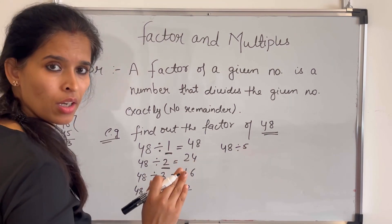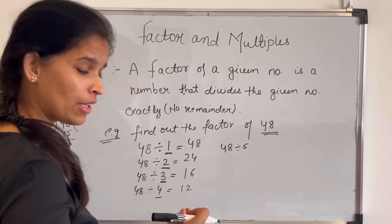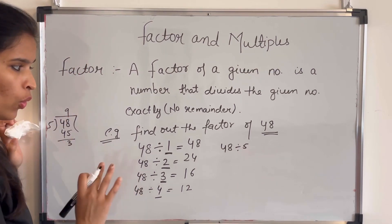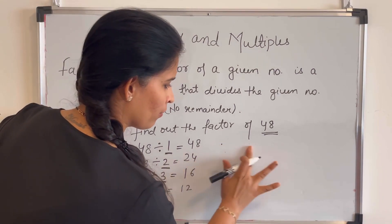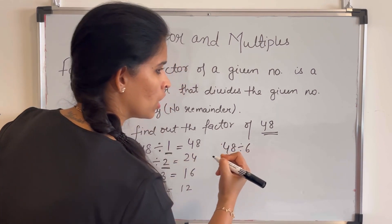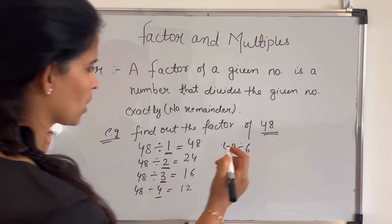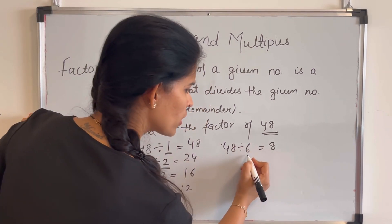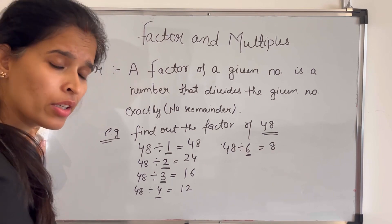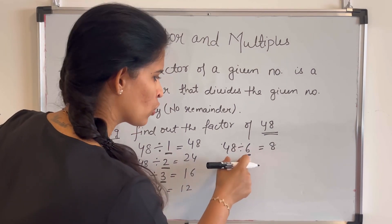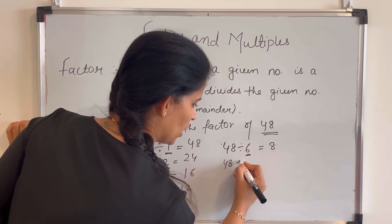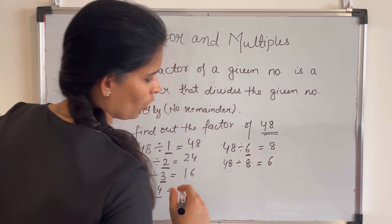So 5 is not a factor of 48, because a factor means those numbers which divide the given number completely — no remainder. What about 6? 48 divided by 6 is 8, so 6 is also a factor of 48. What about 7? 7 cannot divide 48 completely, so 7 is not a factor of 48.